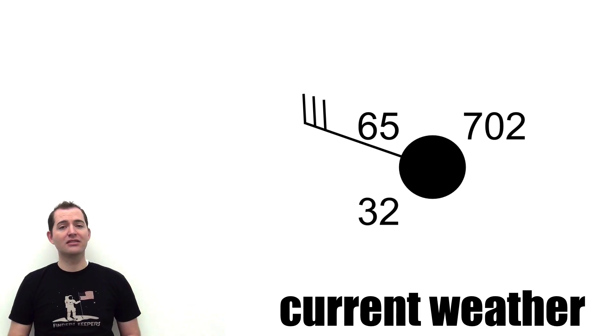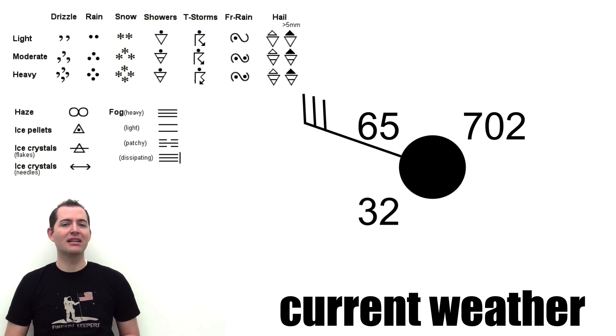Current weather such as rain, snow, or storms can be represented on a station model as well. These symbols are placed directly to the left of the station model circle.